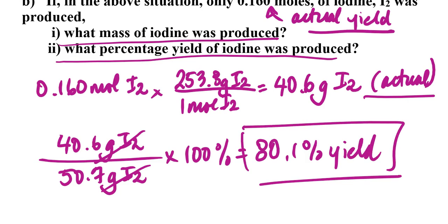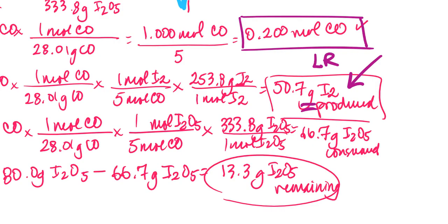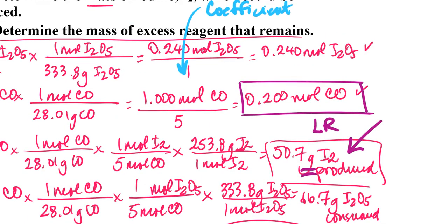Dealing with limiting reagent problems is not all that different from regular stoichiometry problems — it's just a matter of figuring out which of the two reagents is going to be consumed first. There are multiple ways to do it, but this trick where you employ the stoichiometric coefficient is probably the quickest way and will save you the most time. I'm going to put a follow-up assignment for you to try problems like this on your own to confirm that you watched this video, and in class tomorrow we'll do some additional examples. If you have questions, by all means email or see me during class, and I will see you tomorrow.